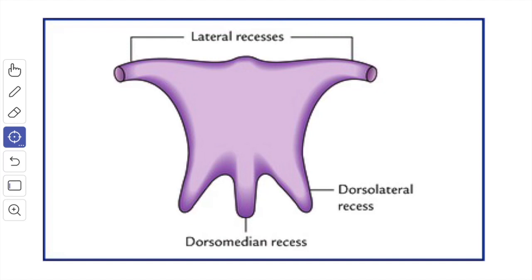Next, we'll see the recesses of the fourth ventricle. They are five in number and are extensions from the cavity of the fourth ventricle. There are two lateral recesses, one on each side, which extend laterally in the interval between the inferior cerebellar peduncle ventrally and the peduncle of the flocculus dorsally. The lateral extremity of the recess reaches up to the flocculus and opens into the subarachnoid space of the cerebellopontine angle as the lateral aperture or the foramen of Luschka, through which part of the choroid plexus bulges out.